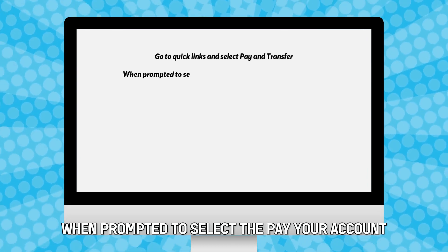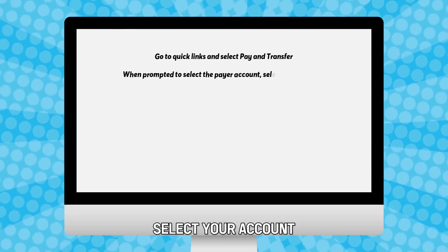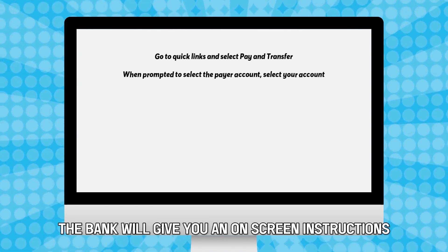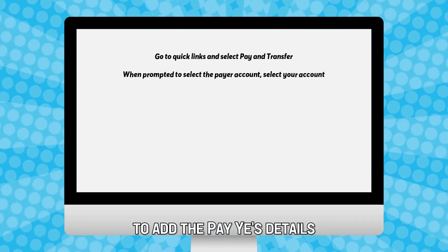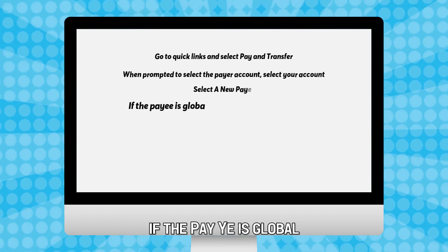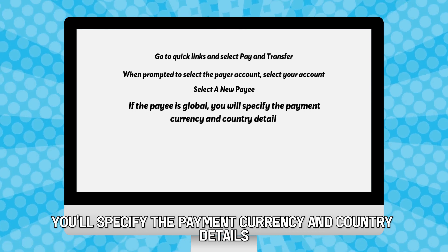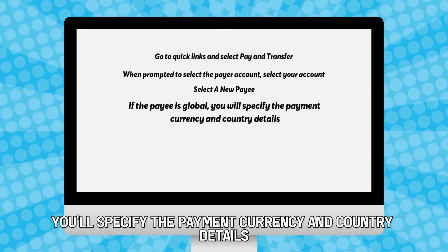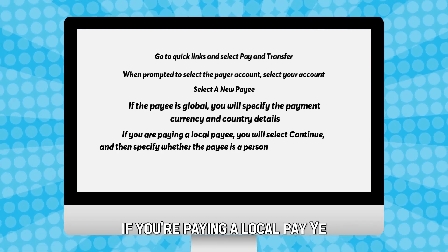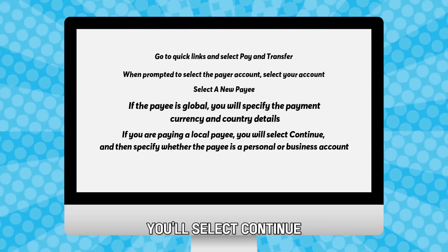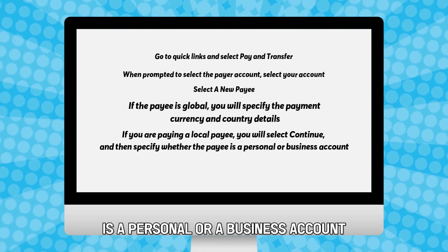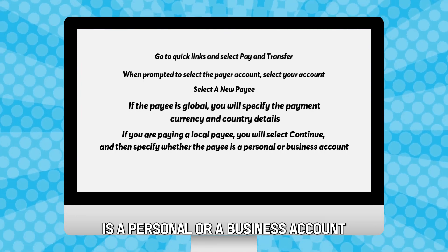When prompted to select the payer account, select Your Account. The bank will give you on-screen instructions to add the payee's details. Select a new payee. If the payee is global, you'll specify the payment currency and country details. If you're paying a local payee, select Continue and then specify whether the payee is a personal or a business account.